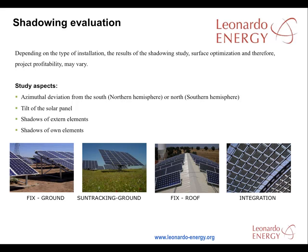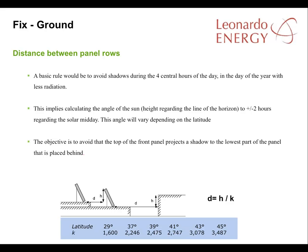Shadowing and surface optimisation can have considerable effect on the plant's profitability. The main aspects to consider are the azimuthal deviation from the south if the plant is in the northern hemisphere, or from the north if the plant is in the southern hemisphere, the tilt of the solar panels, shadows from external features, and shadows from features within the solar plant itself. A basic rule on optimal distancing between rows is to avoid shadows during the four central hours of the day, particularly during the times of the year when solar radiation is lowest.